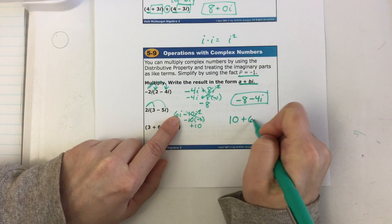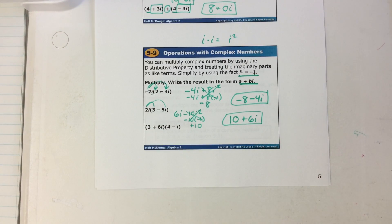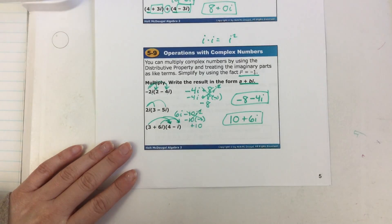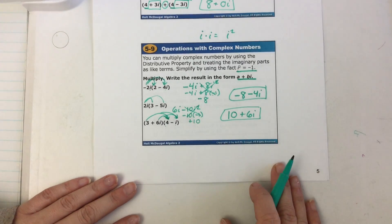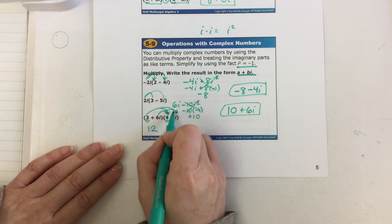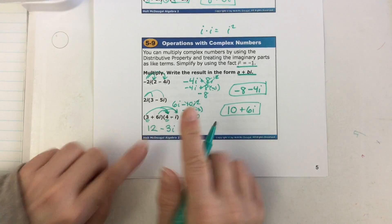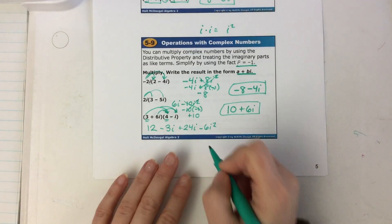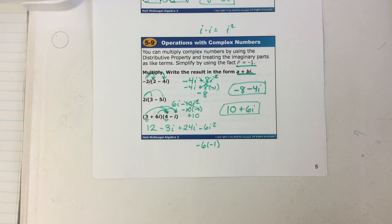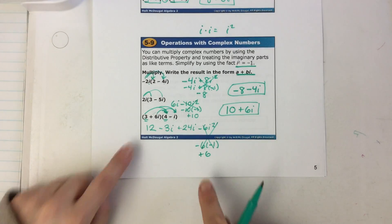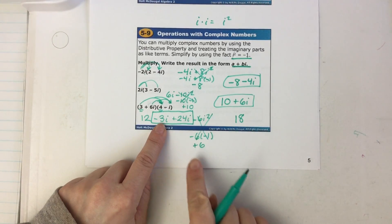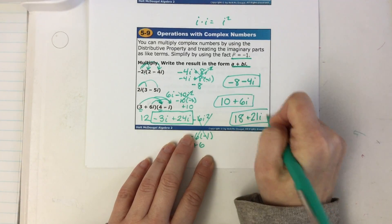We can FOIL — or double distribute. You take the three and distribute it here and here, then the 6i distributes here and here. FOIL: first, outside, inside, last. Three times four is 12; three times negative i is negative 3i; 6i times four is 24i; 6i times negative i is negative 6i squared. Anytime you have i squared, change it to negative one: negative six times negative one is positive six. Combine real values first: 12 plus six is 18. Combine imaginary: negative 3i plus 24i is 21i. Done.